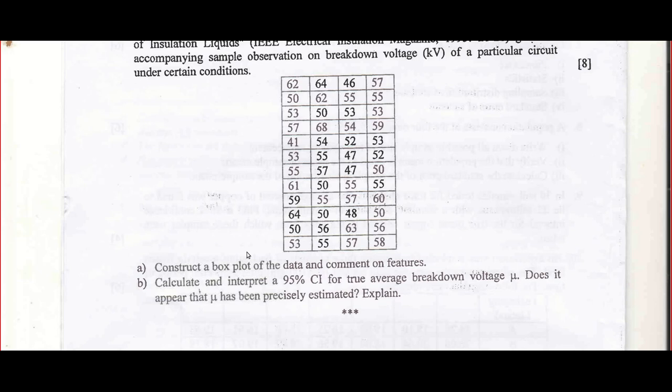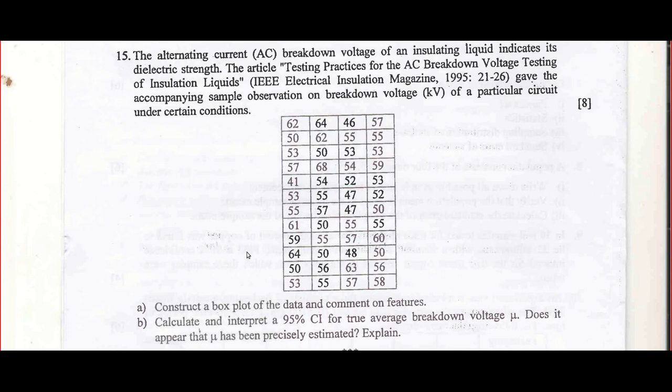Remember, when you are at bachelor's level statistics, your main job is to interpret. So you must use a calculator, especially when you do question number 15, because if you look at the syllabus, they want you to understand how to use software like SPSS. As an engineering student, you are supposed to use calculators for such problems, because in industry the most important part is not calculation, it's interpretation.